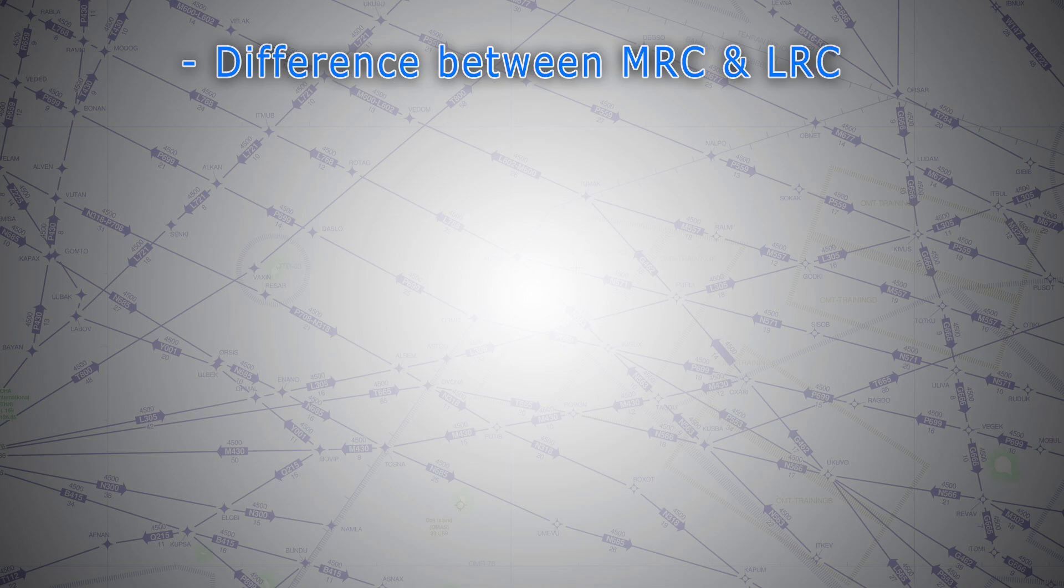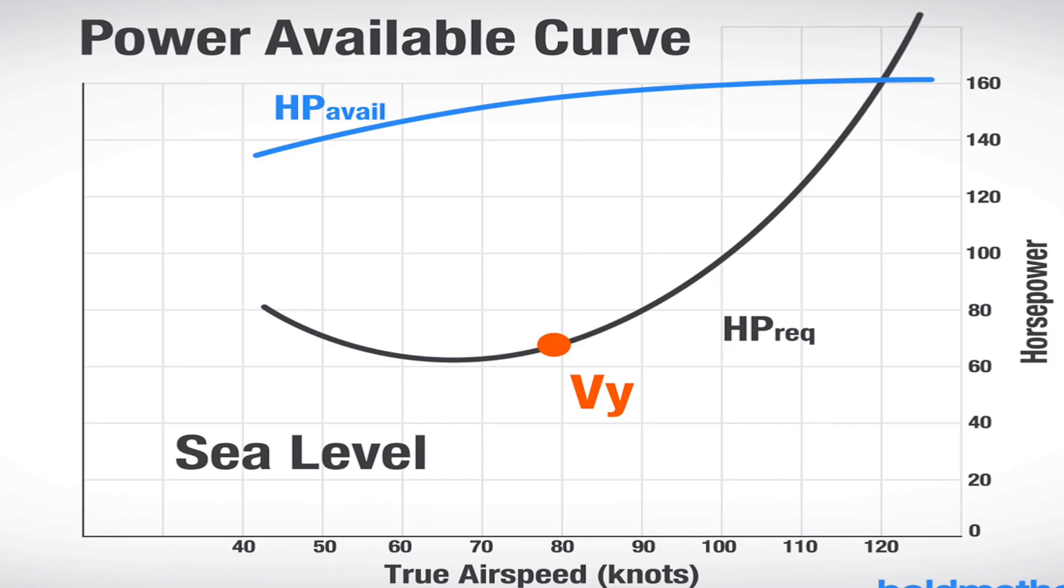In a propeller driven aircraft, L/D max is often associated with Vy, or best rate of climb airspeed. But in a jet, you will often fly close to your best range speed.